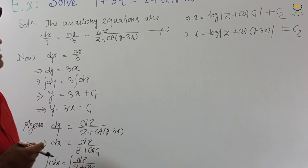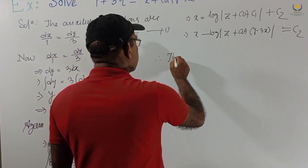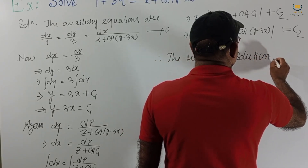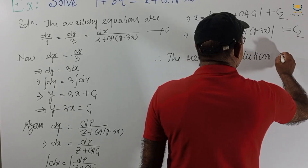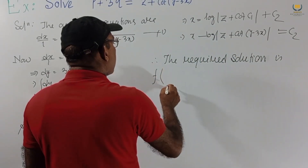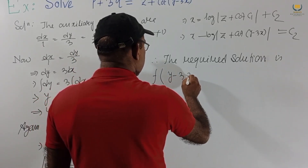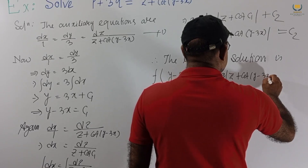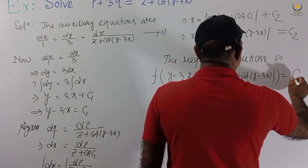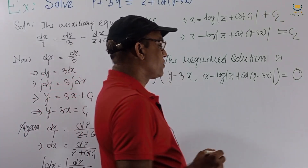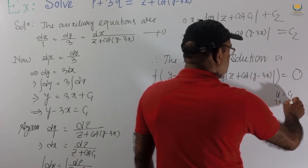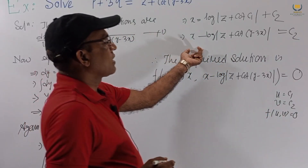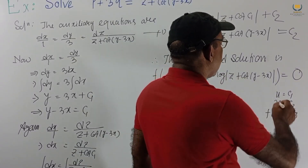Integrating DZ by Z gives log Z. Therefore the required solution is F of (Y minus 3X, X minus log(Z·cot(Y minus 3X))) equal to 0. Because if U equal to C1 and V equal to C2, then the solution is F(U, V) equal to 0. This is our final answer.